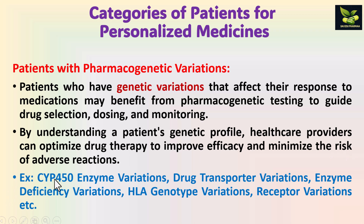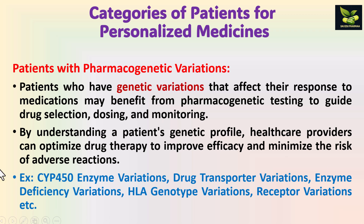Examples of pharmacogenetic variations include CYP450 enzyme variations, drug transporter variations, enzyme deficiency variations, HLA genotype variations, and receptor variations. These various types of genetic variations can be identified, and accordingly personalized medications can be planned.